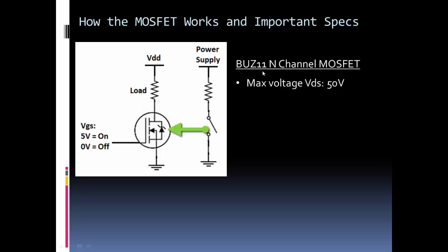That's why this diode is here. If you go higher than 50 volts, that diode will conduct.